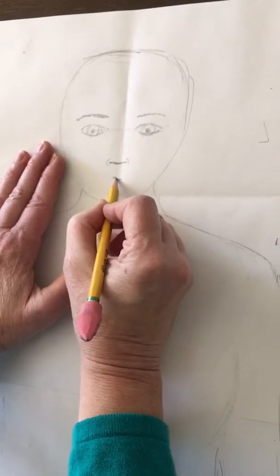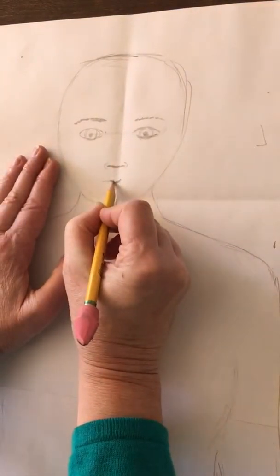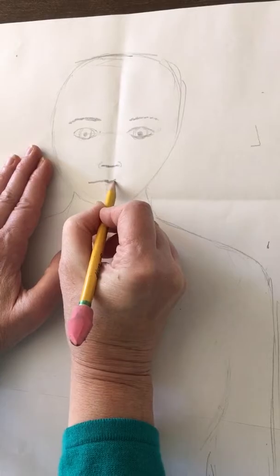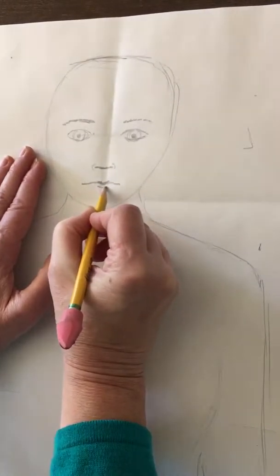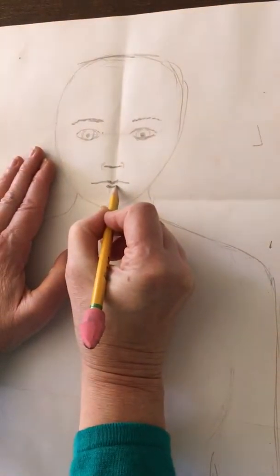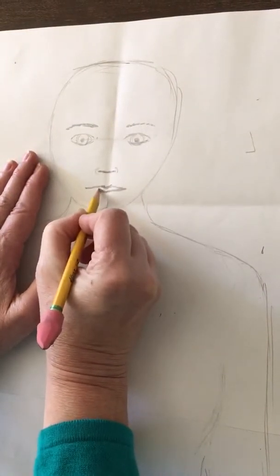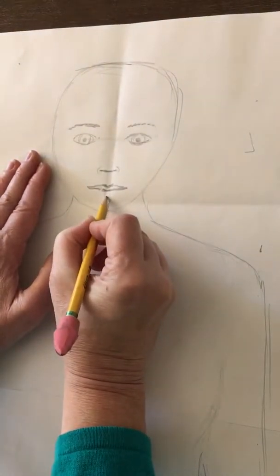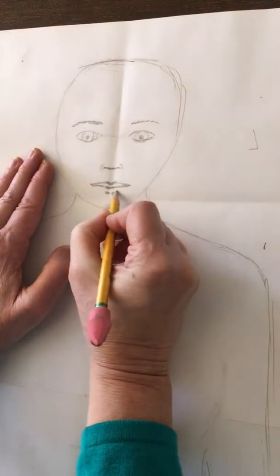The mouth, I always start in the middle. It's easier to get it symmetrical. I say that there's two hills, round spot in the middle. The bottom lip is usually bigger.